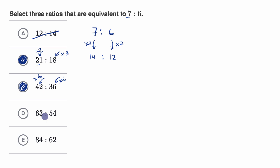63 to 54. Let's see, to go from seven to 63, you multiply by nine. And to go from six to 54, you also multiply by nine. So once again, 63 to 54 is an equivalent ratio.